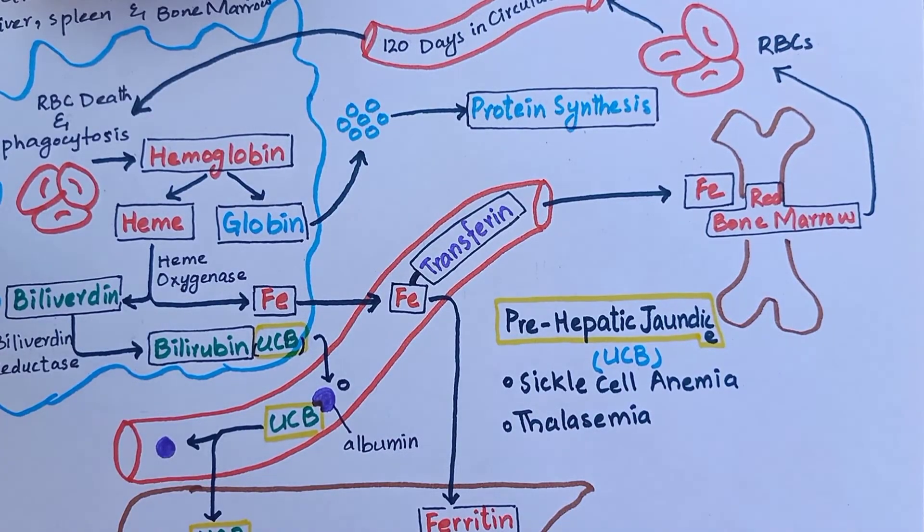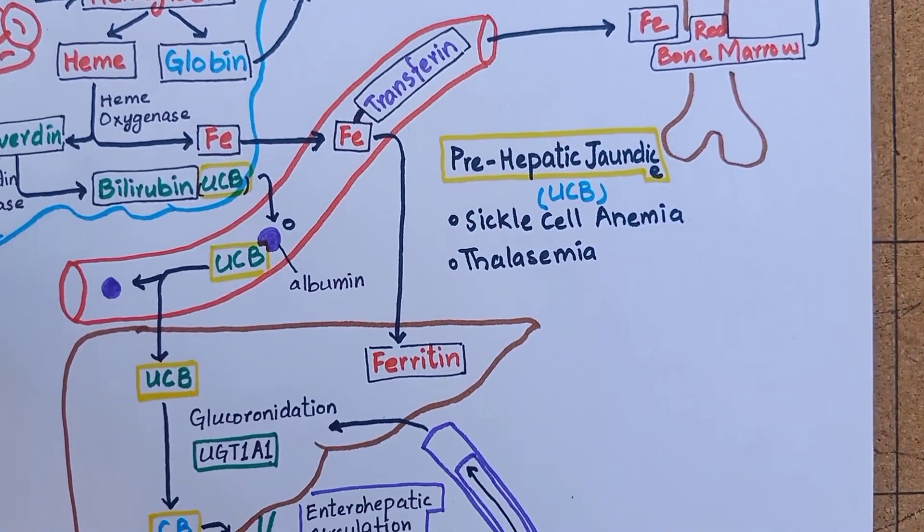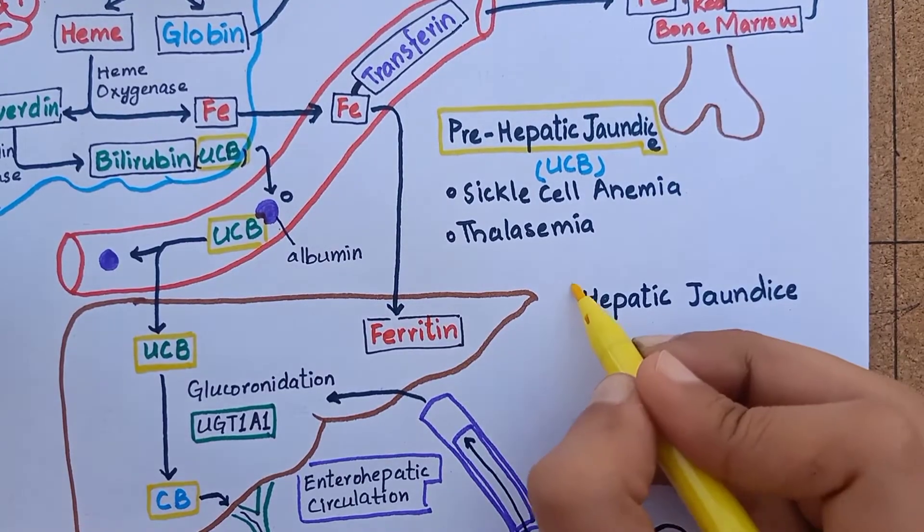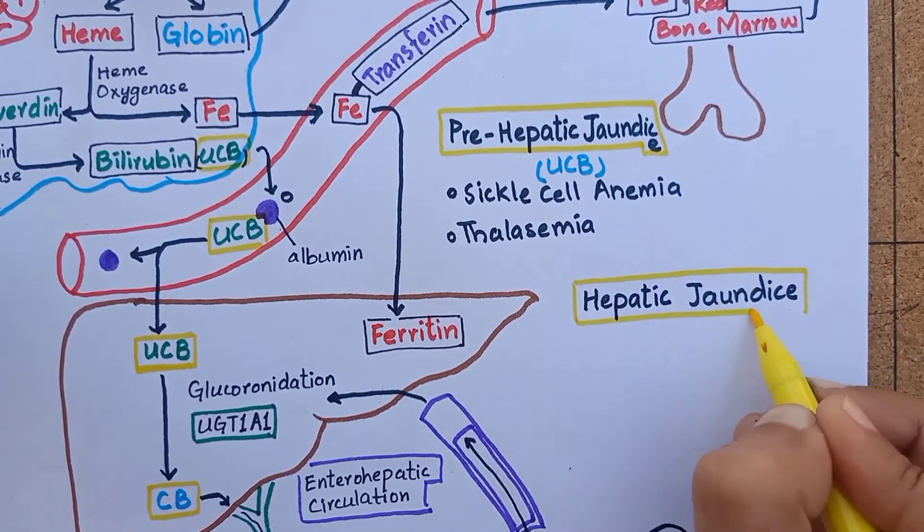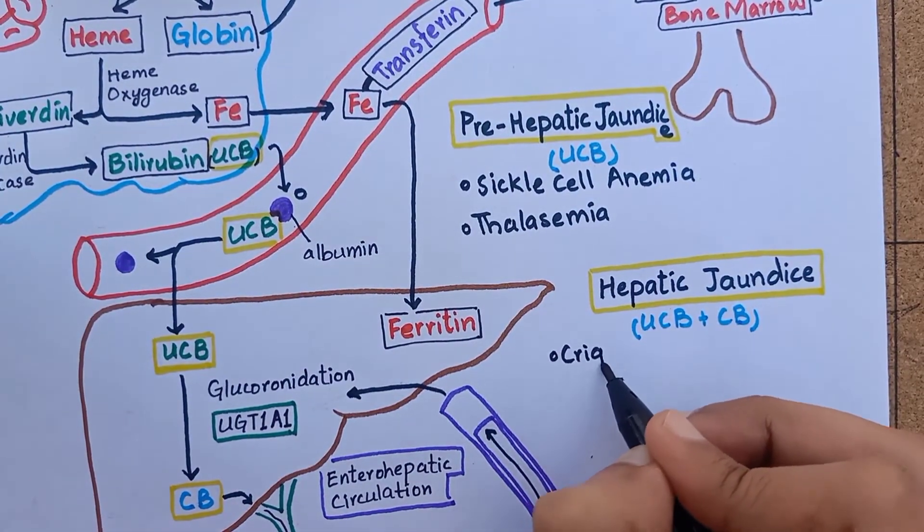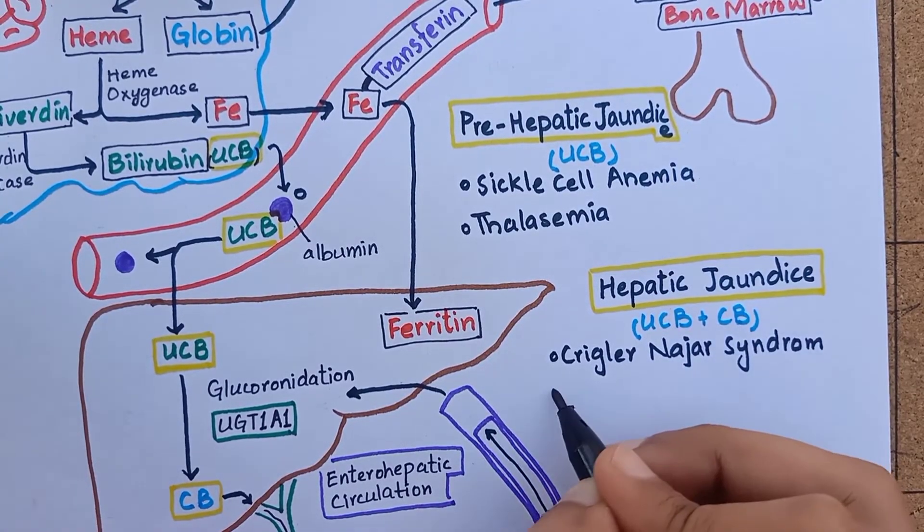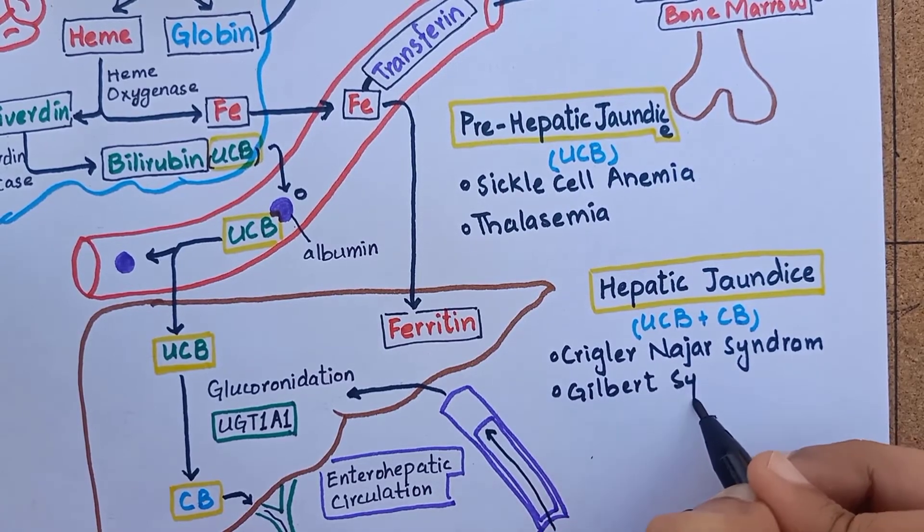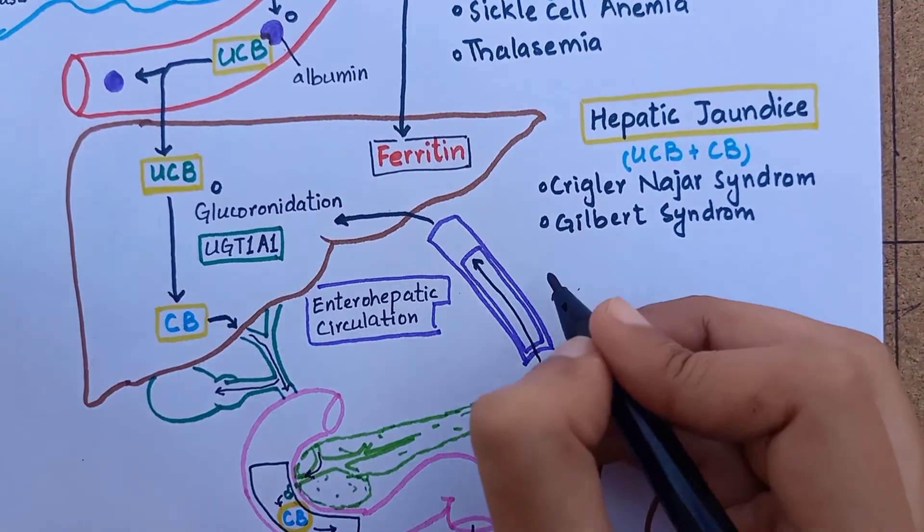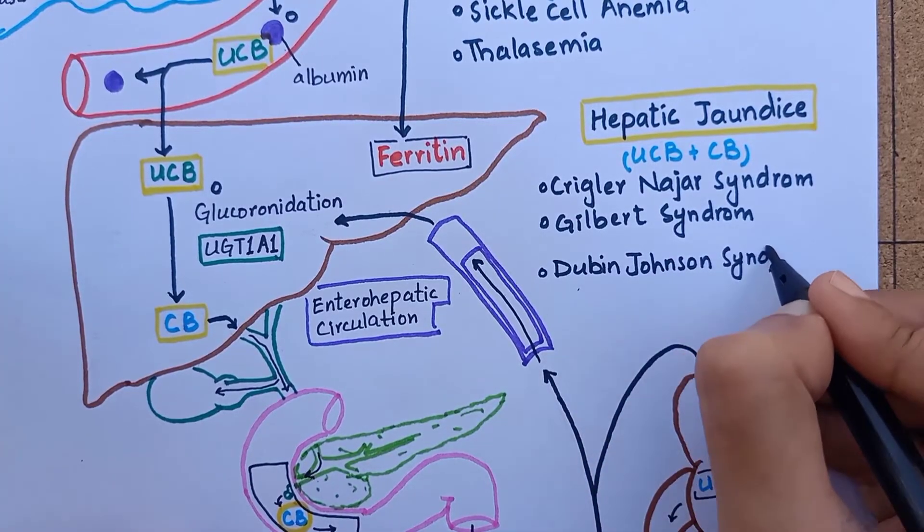It cannot be excreted out of the body even when its levels are high in blood. The next category is hepatic jaundice that is also called mixed type because there is both unconjugated and conjugated hyperbilirubinemia. For example, there are genetic disorders like Crigler-Najjar syndrome and Gilbert syndrome in which there is decreased activity of bilirubin conjugating enzyme UGT1A1 or total absence of its activity. There are other genetic disorders that cause impaired bilirubin excretion.